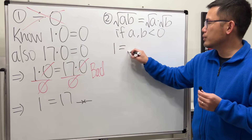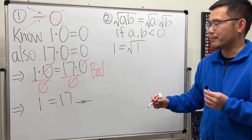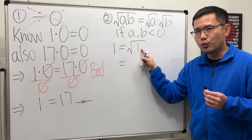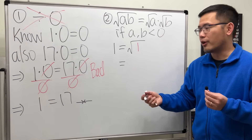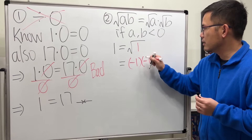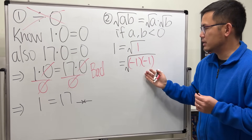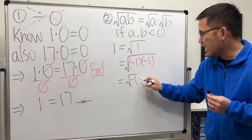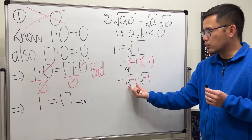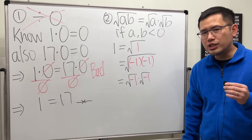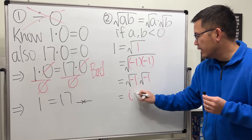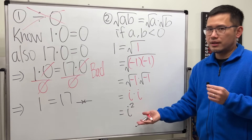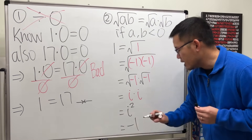Let's start with one. One equals square root of one — just the positive square root, so it's just one. Now, inside the square root, can we say that's negative one times negative one? Sure. So we replace that and then, if we can split the square root, we get square root of negative one times square root of negative one. Square root of negative one is just the imaginary unit i, so we end up with i times i.